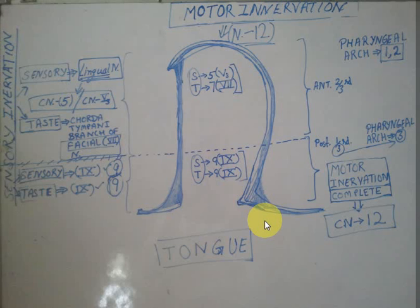To recap: in the posterior one-third, all sensory — both taste and pressure — is from cranial nerve 9, the glossopharyngeal nerve. In the anterior two-thirds, somatic sensation is from nerve 5 and taste is from nerve 7. Motor innervation, as shown by the tongue shape, is from nerve 12.